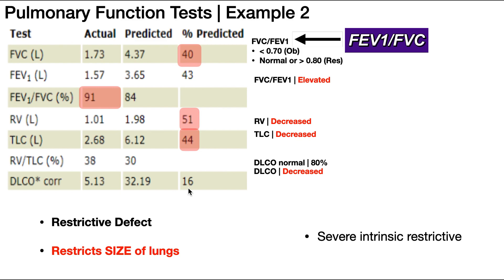Now let's analyze this problem and figure out if it's restrictive or obstructive. The very first thing to look at is the actual FEV1 to FVC ratio — this one doesn't have a percent predicted because it's already a percent, so we just look at the actual value. Here the ratio is 91%. Whenever this ratio is elevated — greater than 0.8 — it's likely a restrictive defect. When the value is low, less than 0.7, that's an obstructive defect. So we're already thinking restrictive defect.